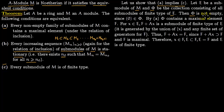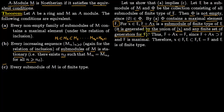φ is non-empty precisely because 0 is in φ. So we can use condition A: every non-empty family of submodules of M contains a maximal element. By A, φ contains a maximal element, which we fix as F.